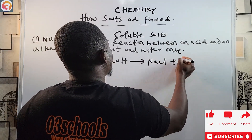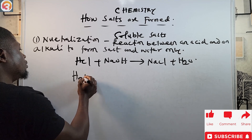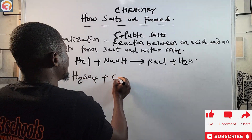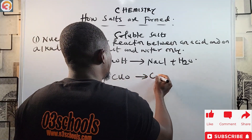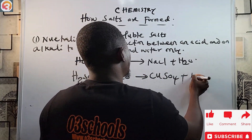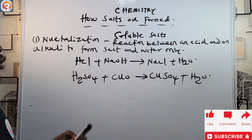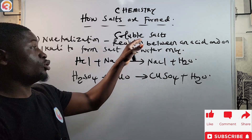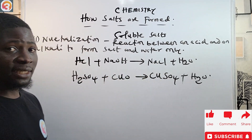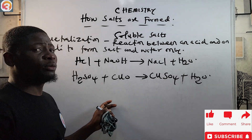Another example: H2SO4 can also react with CuO to give copper sulfate (CuSO4) plus water (H2O). These are soluble salts produced through neutralization. This is one method used to produce soluble salts.